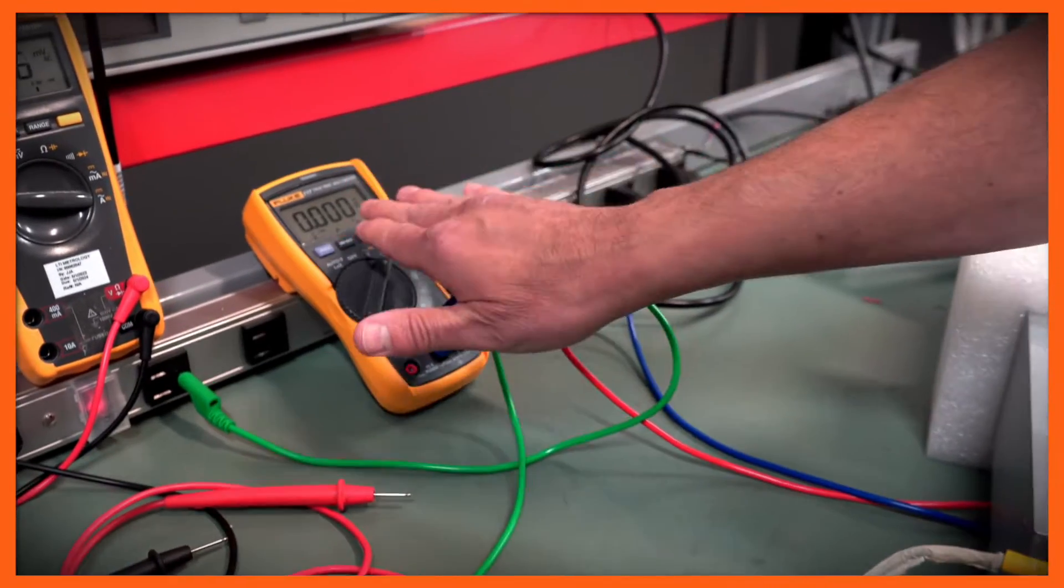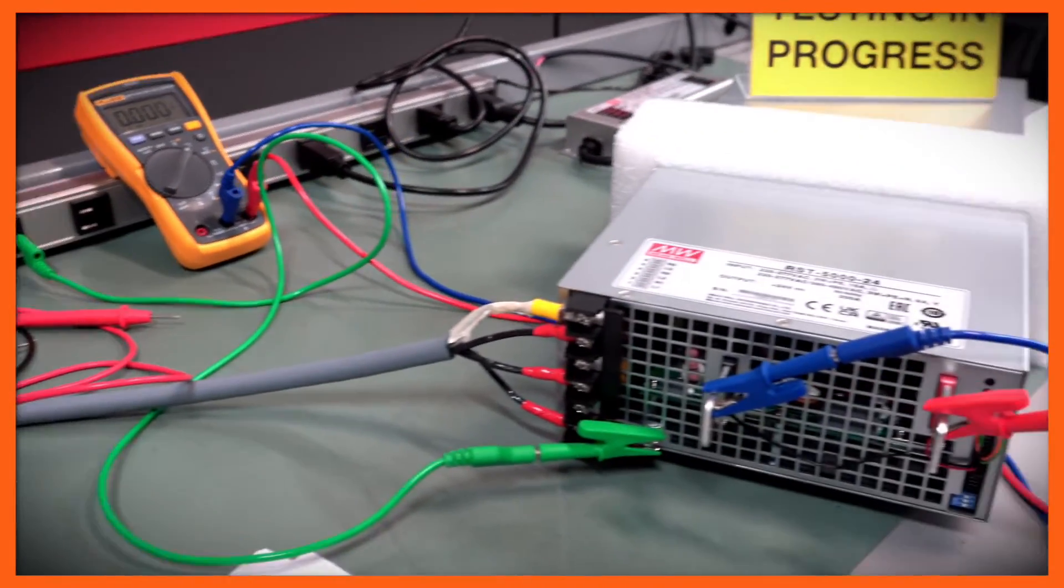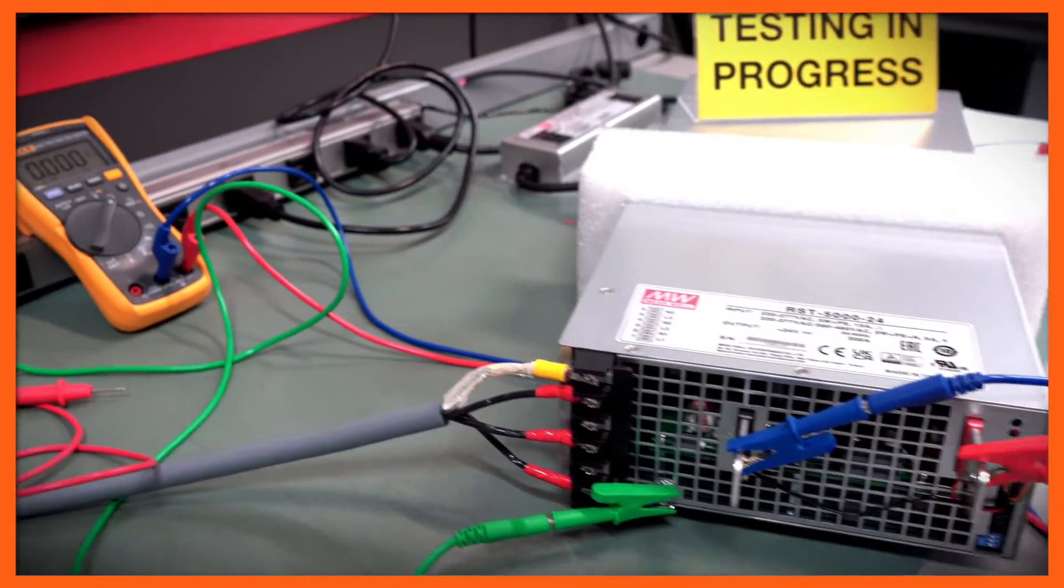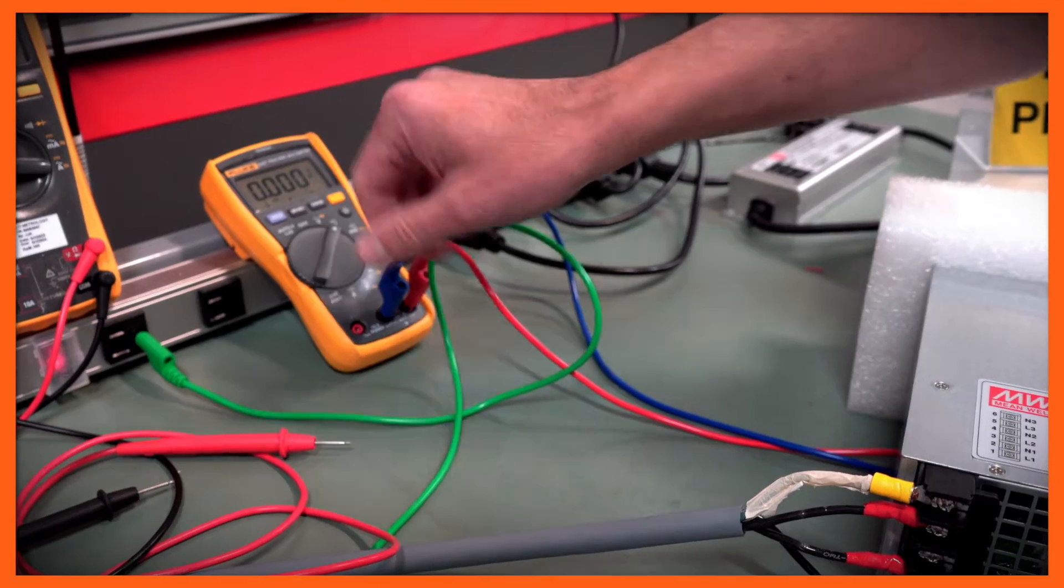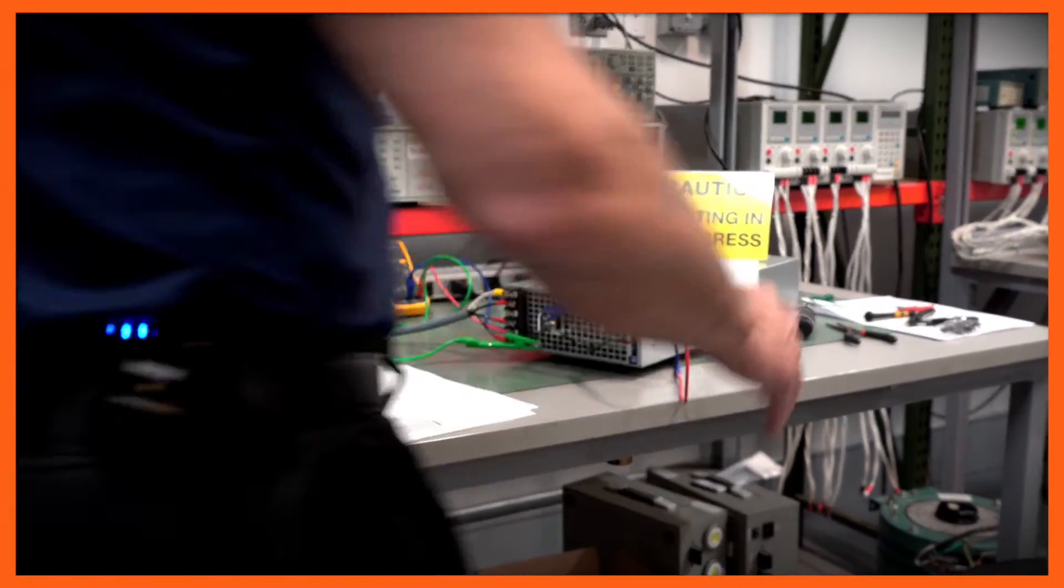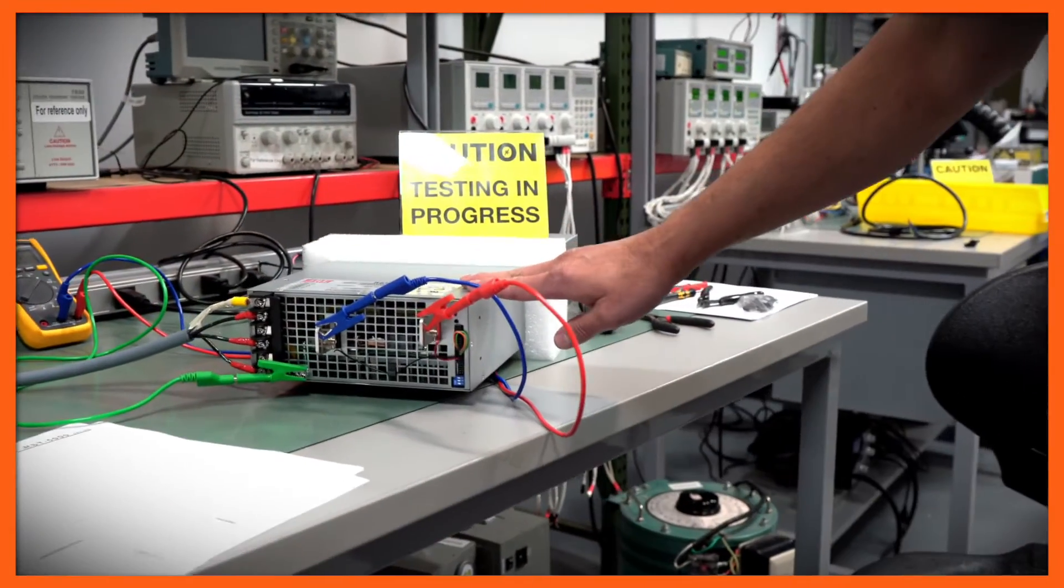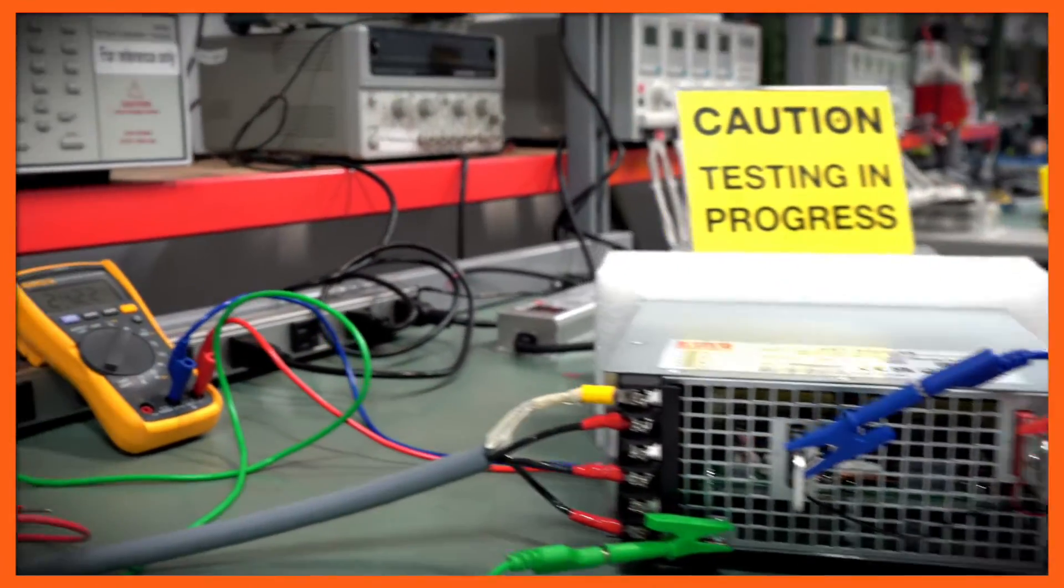I've got my DC voltmeter hooked up to the output terminals. When I turn on the power, I should be able to read the output voltage of 24 volts on this meter. You can see the power supply is now on, and we have 24 volts on the output.